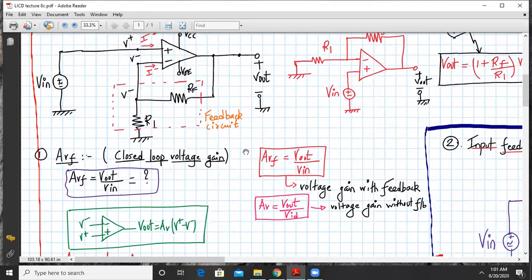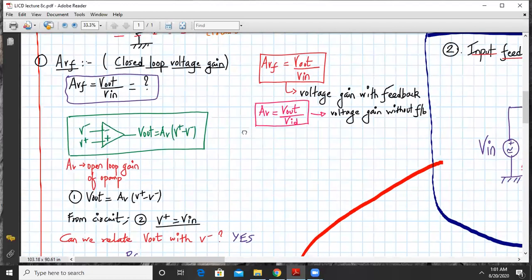The open loop voltage gain AV is given by Vout equals AV times V plus minus V minus, which can also be written as AV equals Vout upon Vid, where Vid is the differential input voltage V plus minus V minus. We need to focus on finding the expression of AVF, that is Vout upon Vin. So let us begin with analysis.